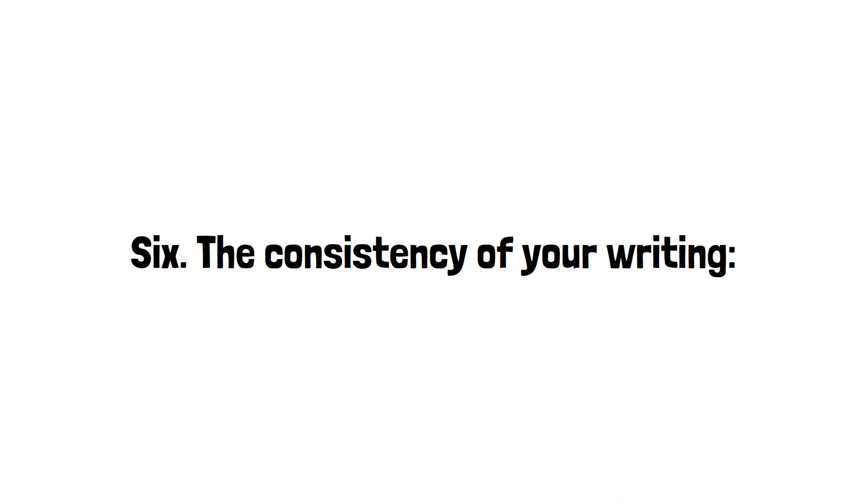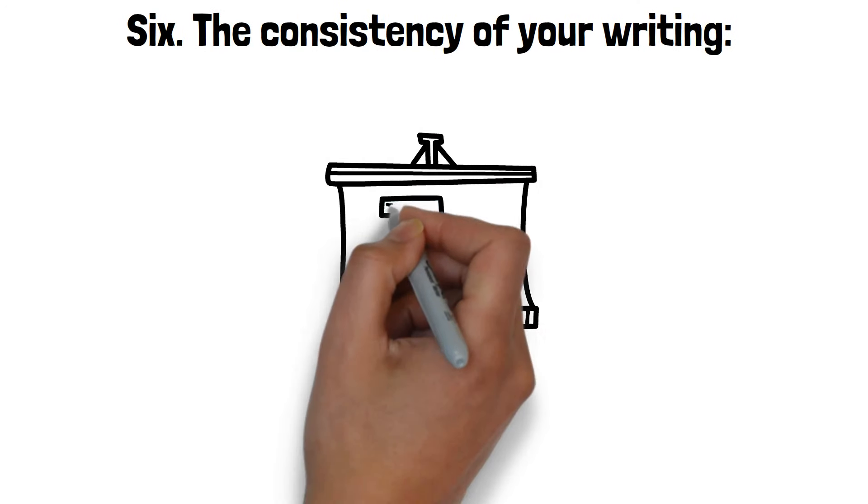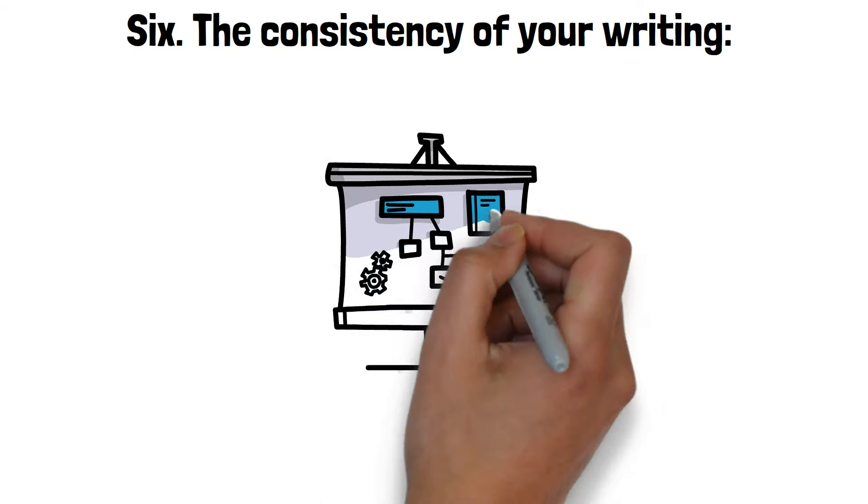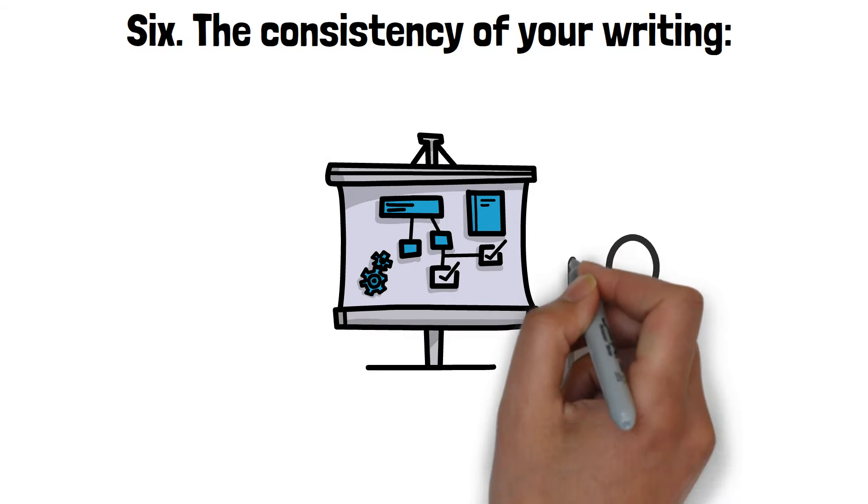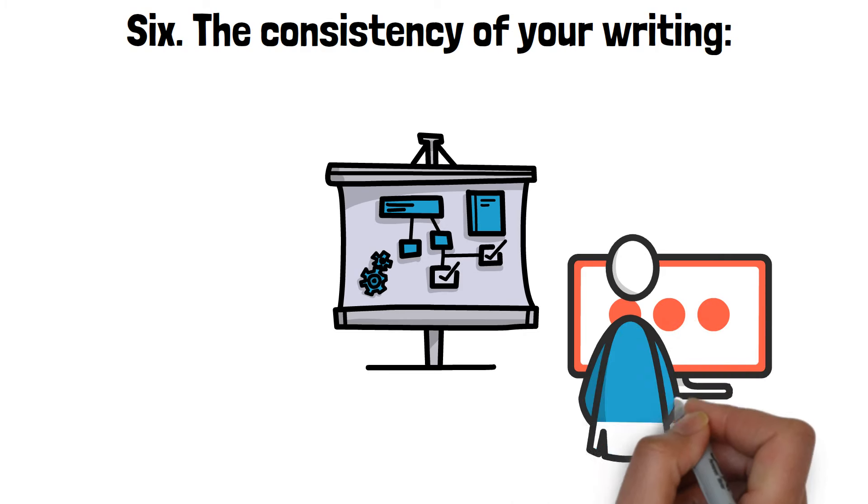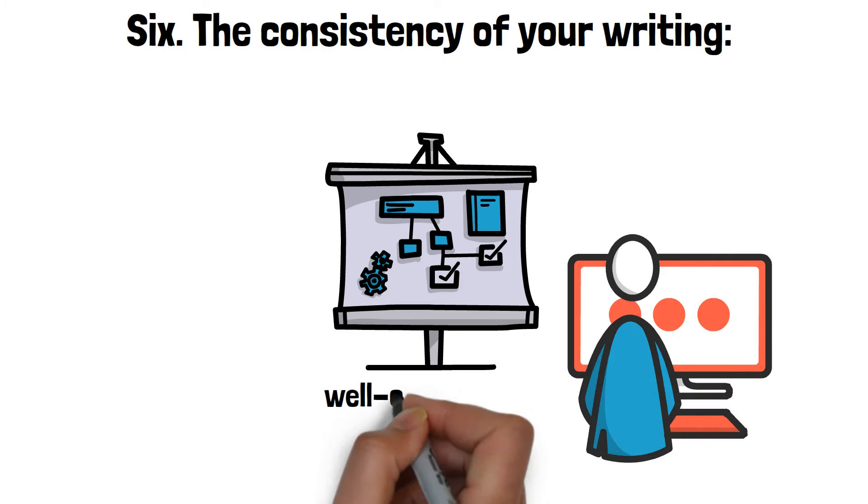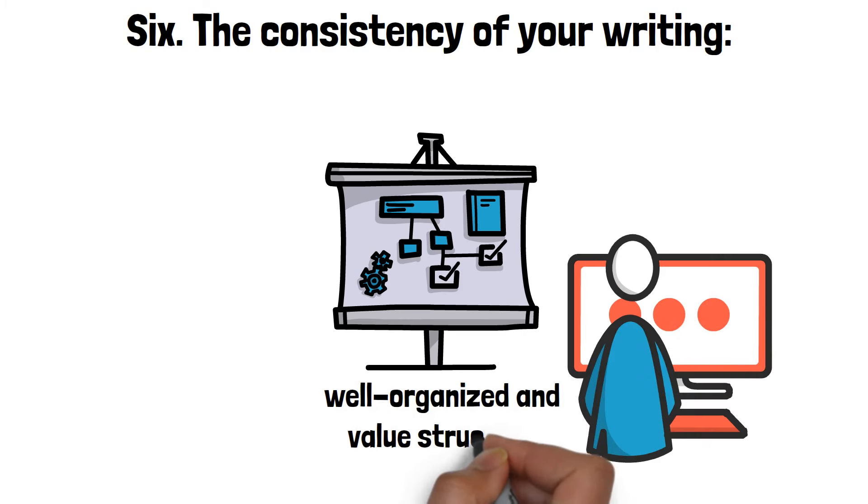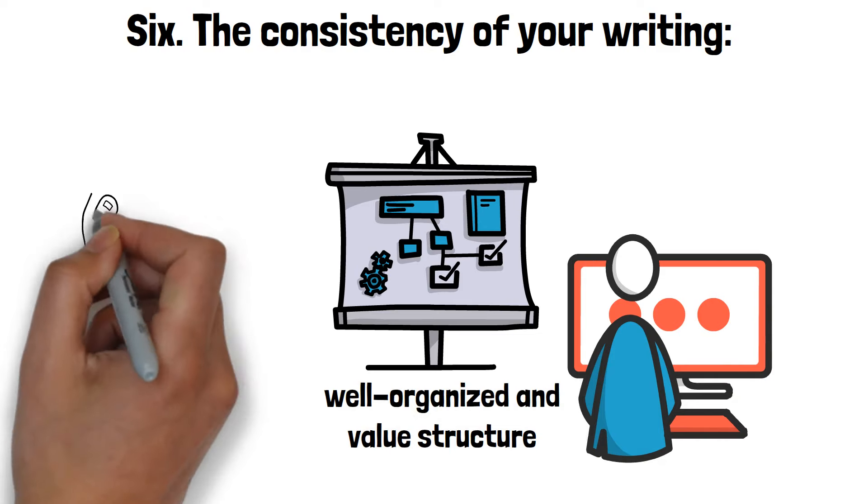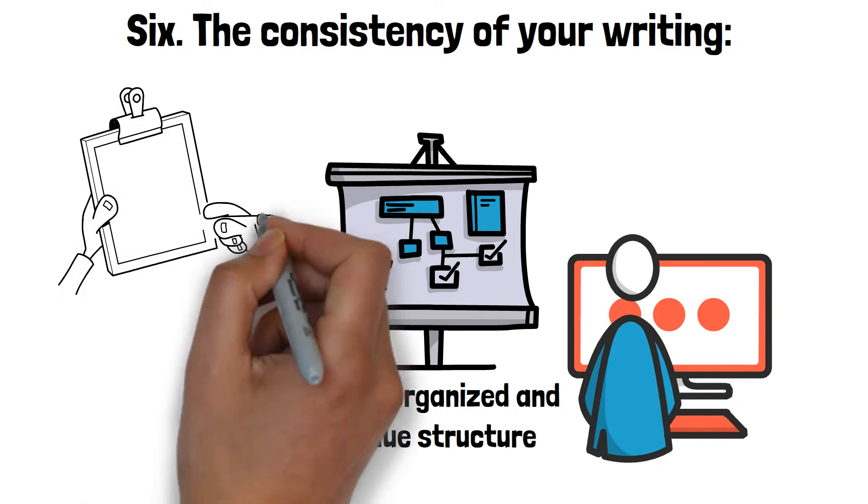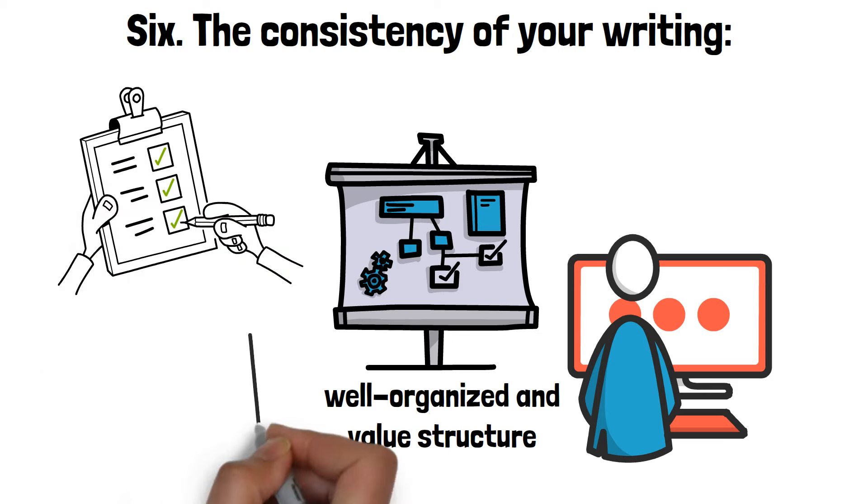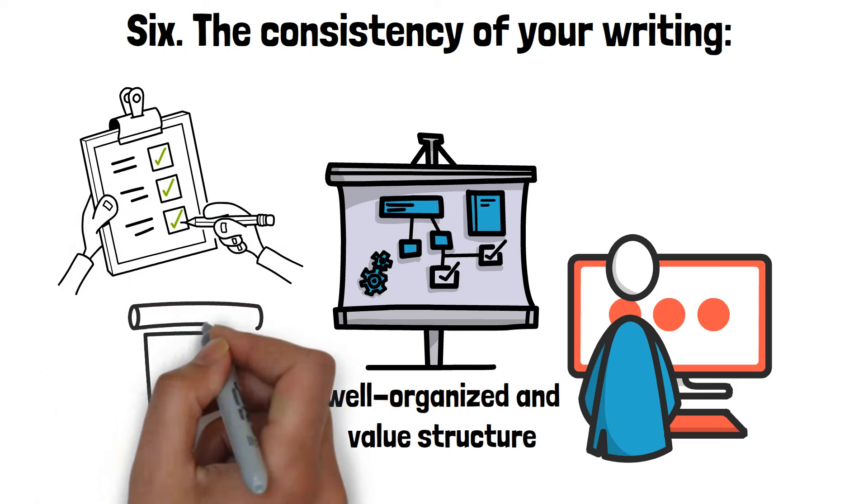The consistency of your writing. Consistent handwriting suggests reliability and organization. If your letters are uniform in size and style, it indicates that you are dependable and systematic. People with consistent handwriting tend to be well-organized and value structure in their lives. They are likely to follow routines and prefer having a clear plan. This type of handwriting reflects a person who can be trusted to meet deadlines and maintain order.